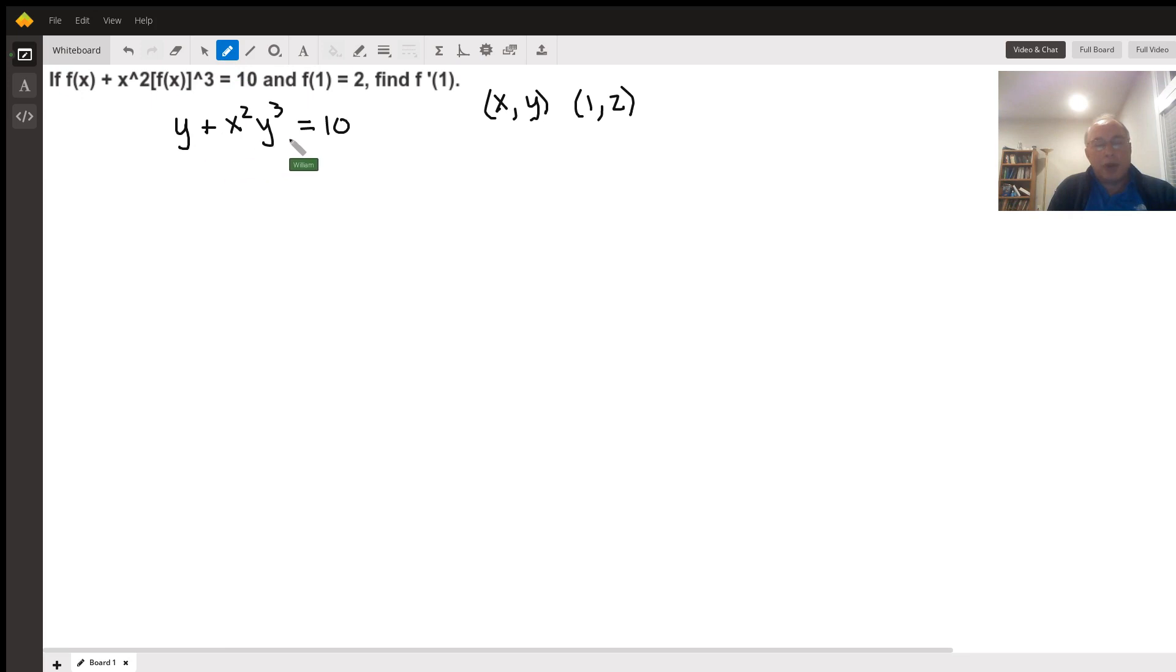To figure out the derivative, I'm going to use implicit differentiation to do that because I've got y's and x's intermingled here, and it's going to be easier for me to do that. So the derivative of, I'm going to apply the derivative operator to both sides.